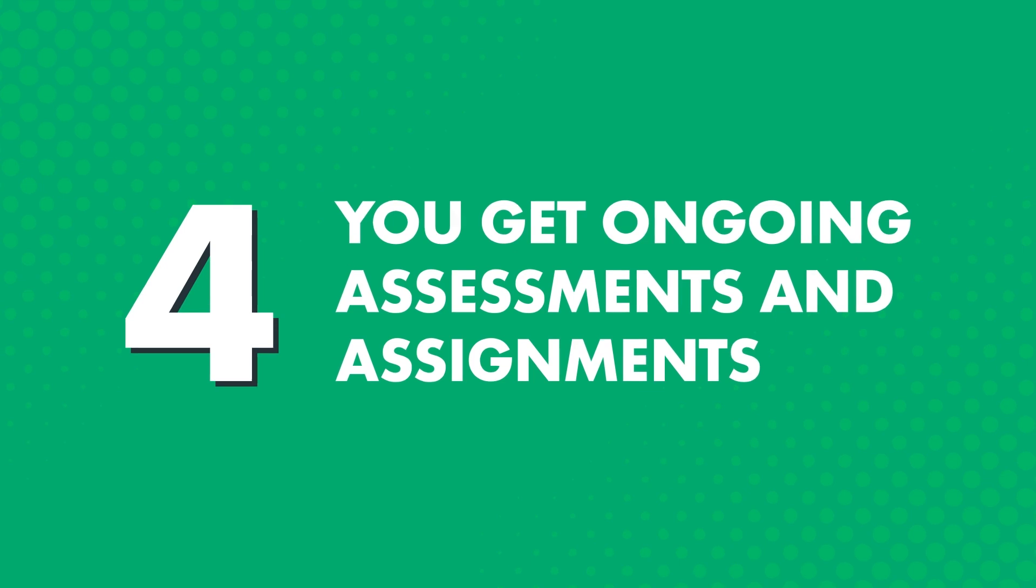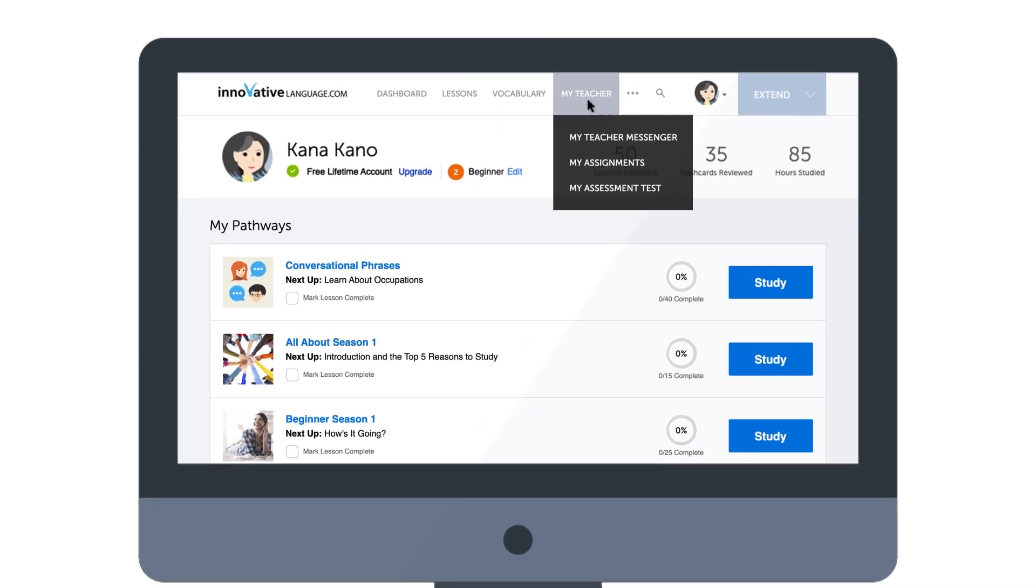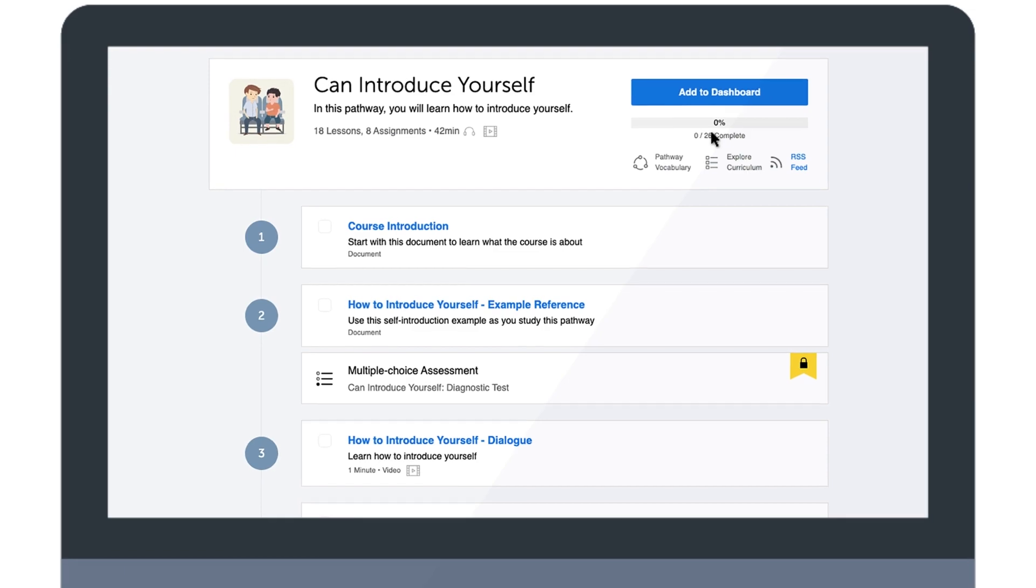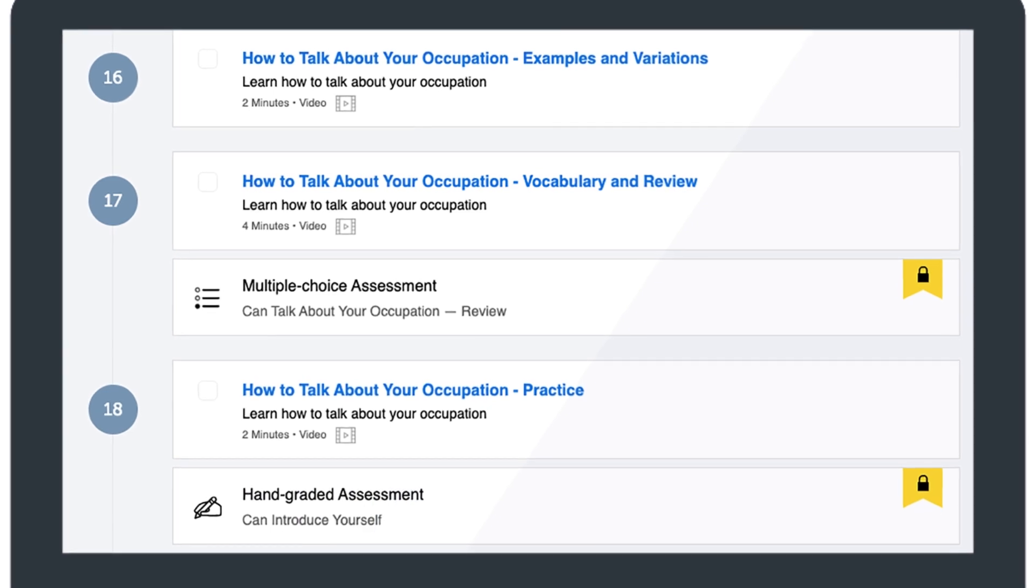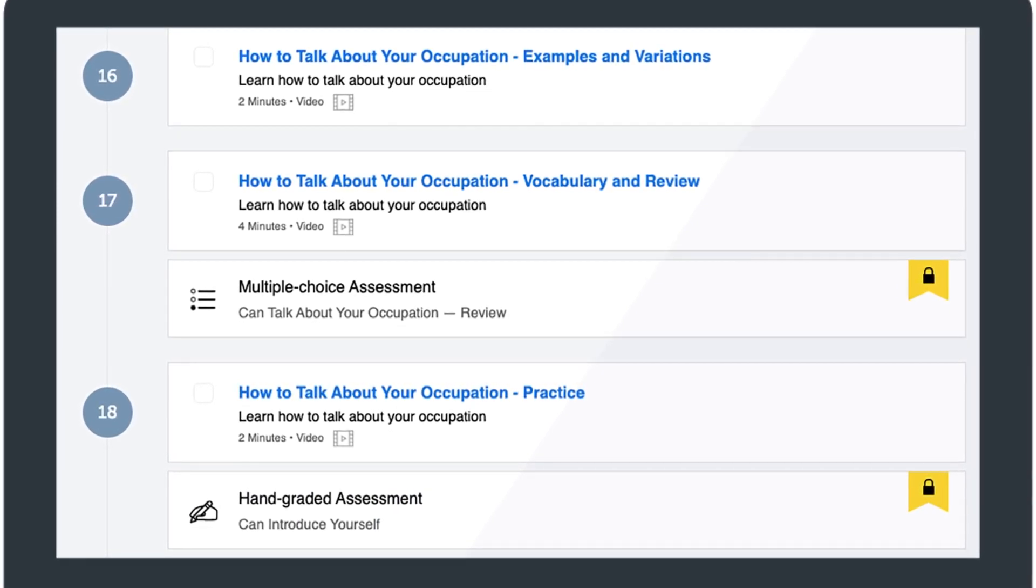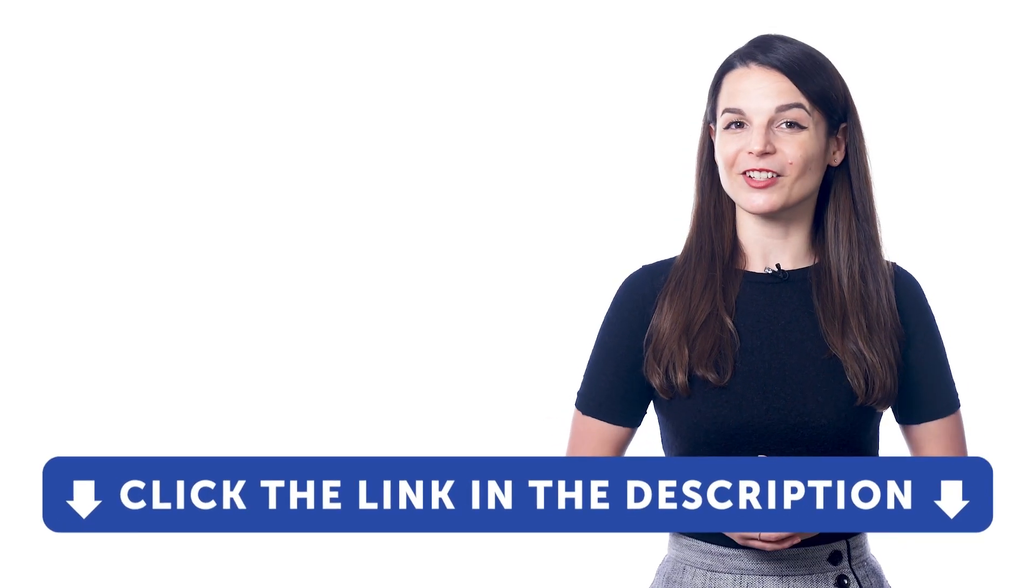Four, you get ongoing assessments and assignments. It's hard to motivate and push yourself to improve when you're learning on your own. It's much easier when you have a teacher to motivate you. So that's why your teacher sends you weekly assignments, which you'll find in the My Teacher Messenger. Inside your recommended learning pathway, you'll also see multiple-choice assessments and hand-graded assessments, which test you on the words and grammar rules you've learned in the prior lessons. And the hand-graded assessments are graded by real teachers, so you can get feedback on what you got wrong and how to improve. So, if you want to learn your target language faster with the Premium Plus Plan, then click the link in the description right now.